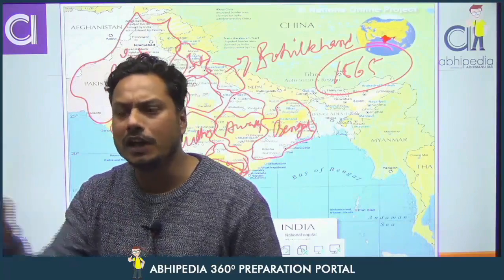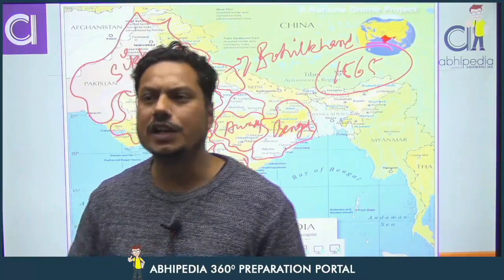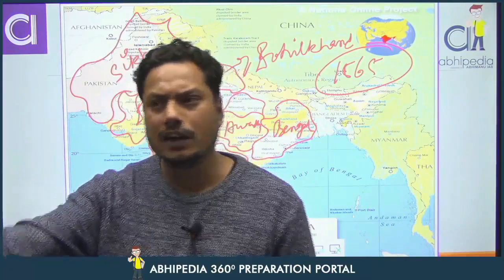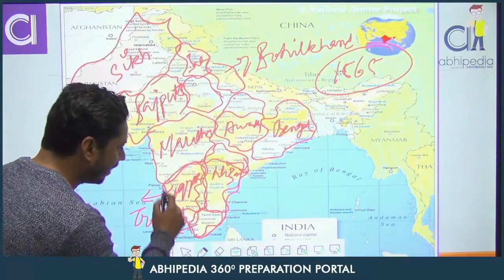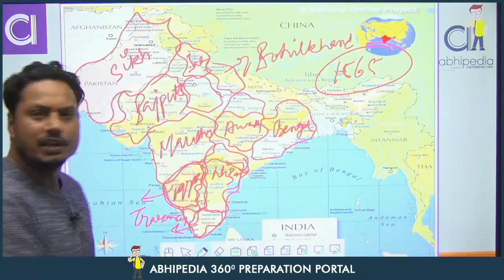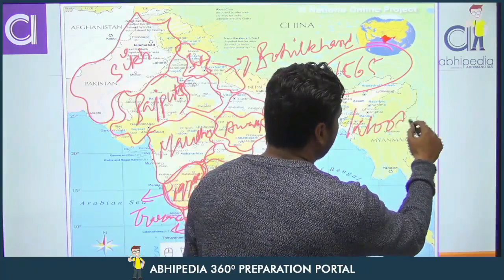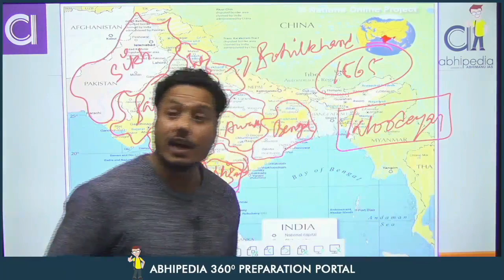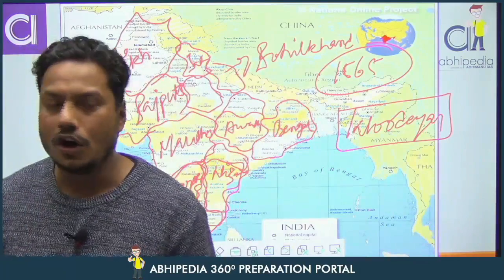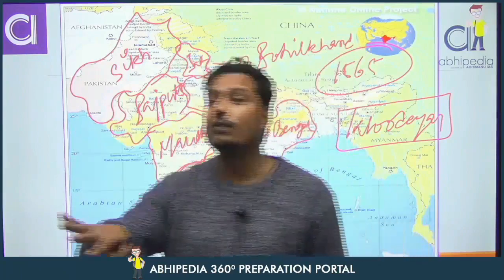After this, what happened? The Vijayanagar Empire was disintegrated. We have learned this — Ahmadnagar, Bijapur, Golconda, Berar, Khandesh — these all fought against Vijayanagar. After the Vijayanagar Empire declined, the Vijayanagar Empire was the major region, and Mysore was one of the feudatories of the Vijayanagar Empire.